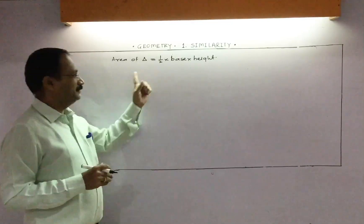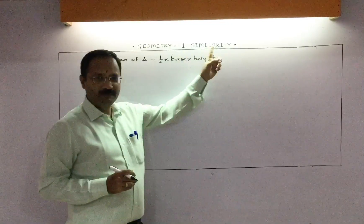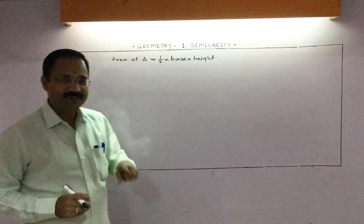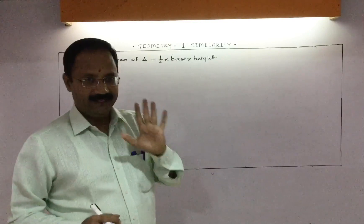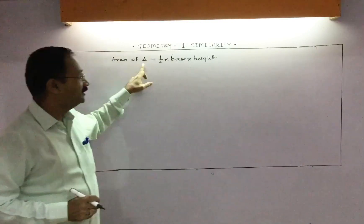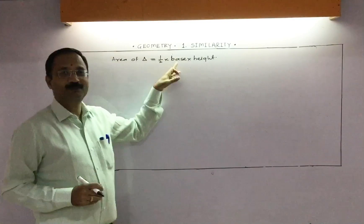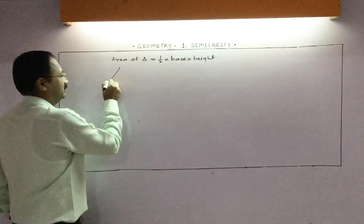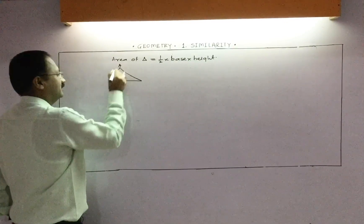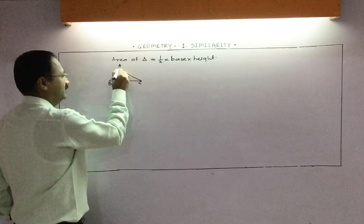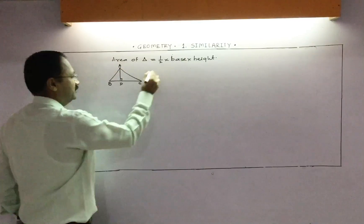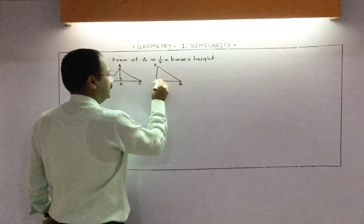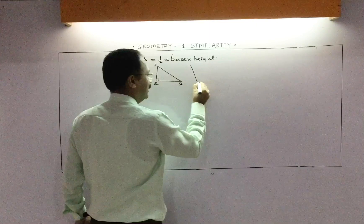Hi students, today we are going to start chapter number one, Similarity of Geometry. We have studied the area of a triangle. Area of triangle equals to half into base into height. Now see these triangles: triangle ABC, triangle PQR, and triangle LMN.